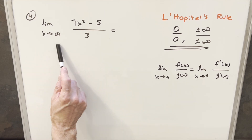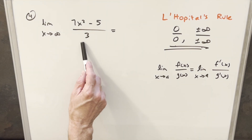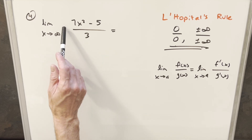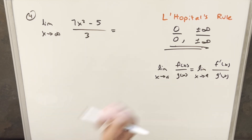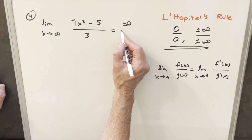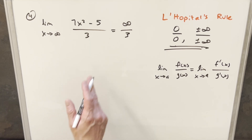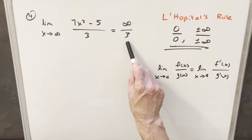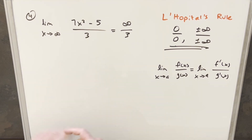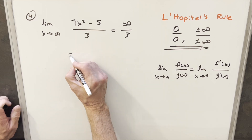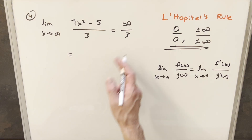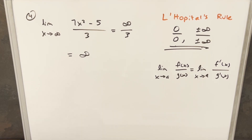Moving on to problem 4, the denominator has changed — instead of having any x terms, we just have a 3. Evaluating at infinity, the numerator goes to infinity but the denominator is just 3. This is not an indeterminate form at all. Infinity divided by 3 is still infinity — you can multiply, divide, or do pretty much anything to infinity and it's still infinity. So this is not a case where we can use L'Hôpital's Rule; we just evaluate it as going to infinity.